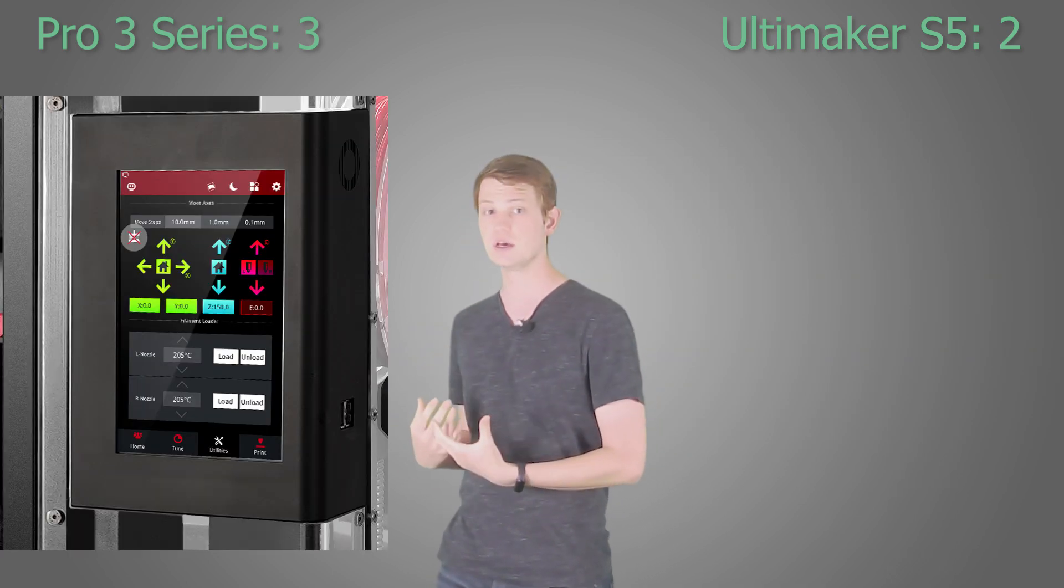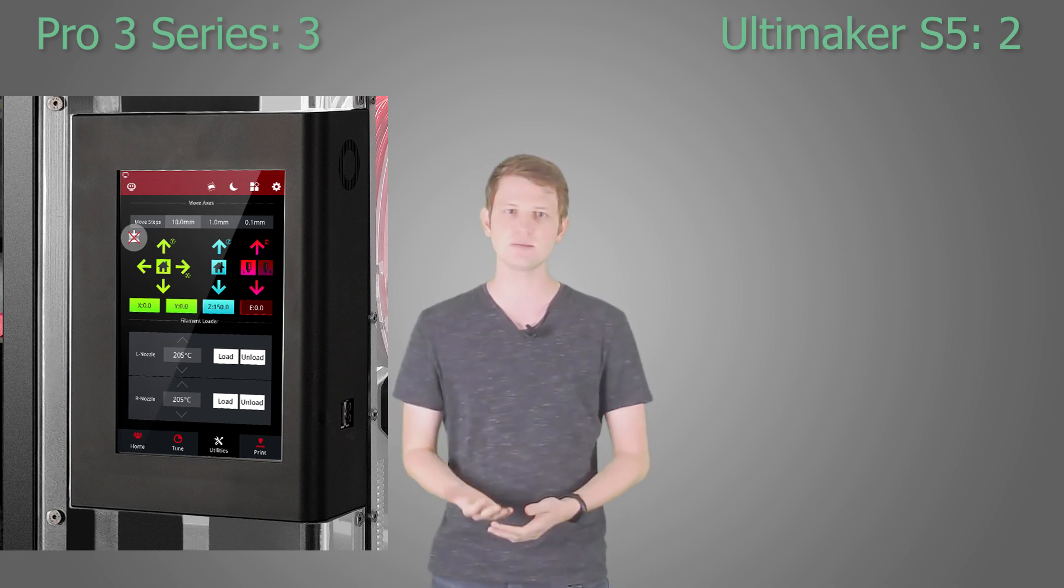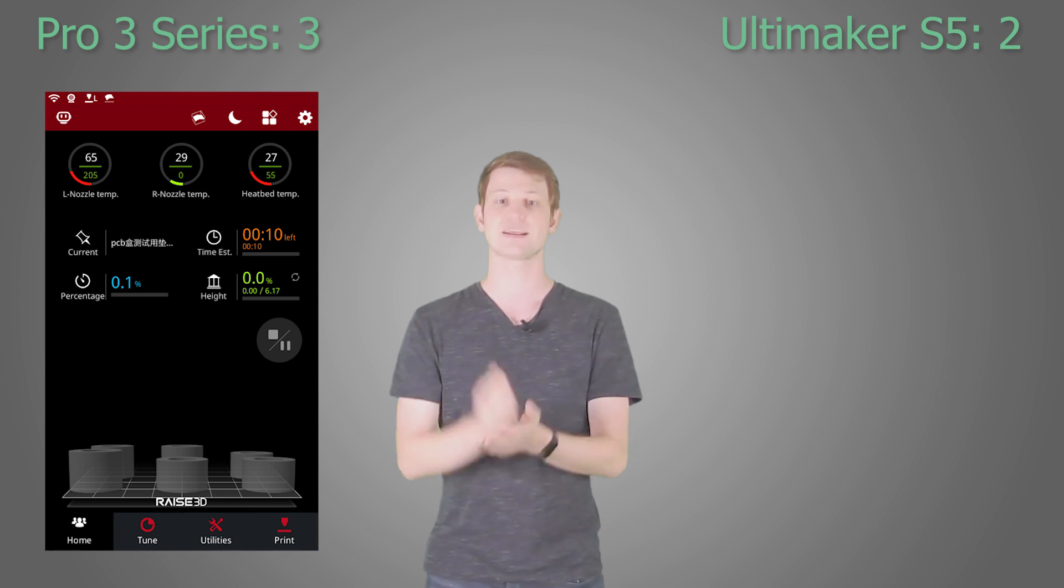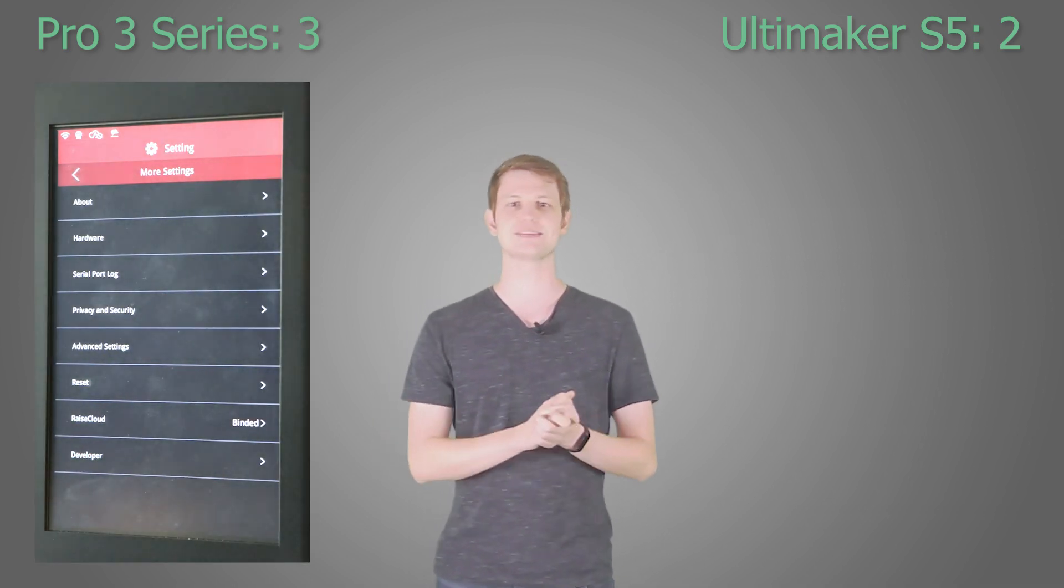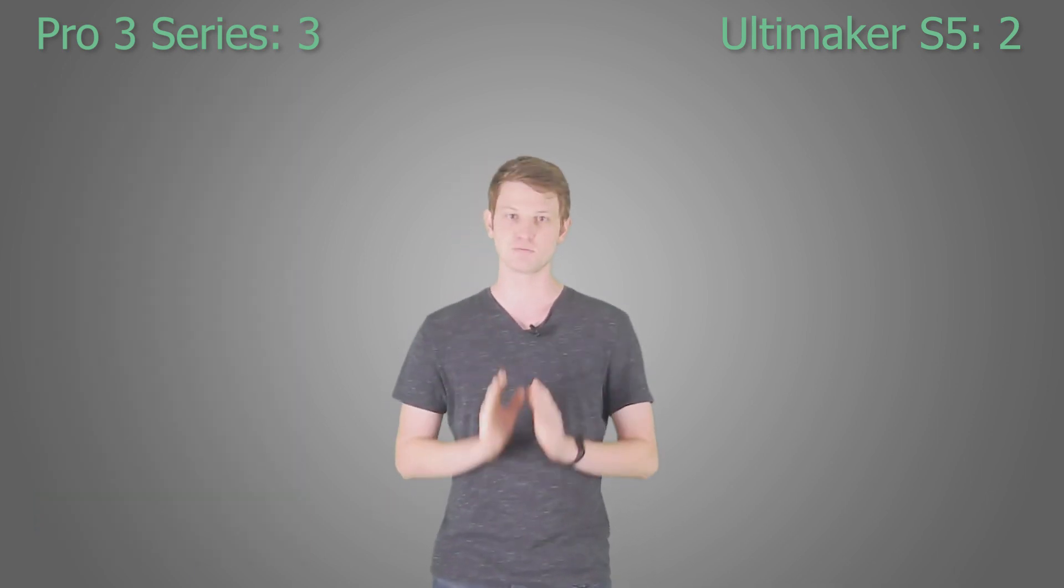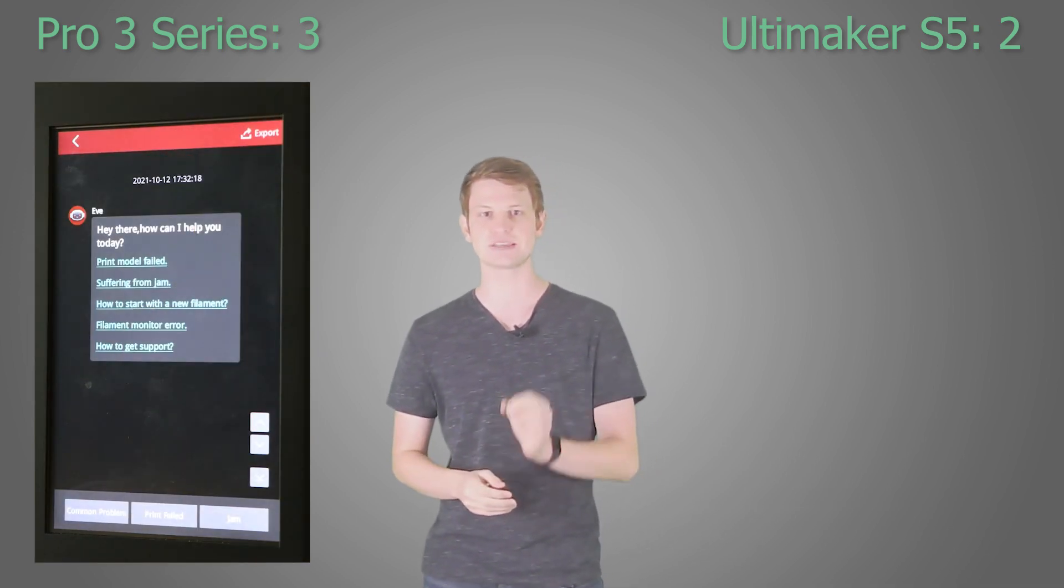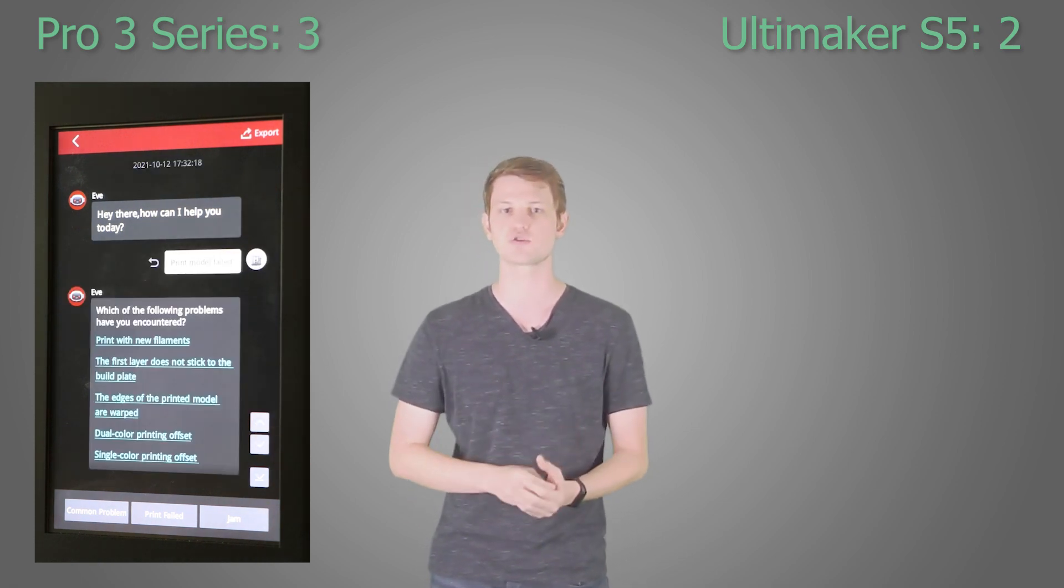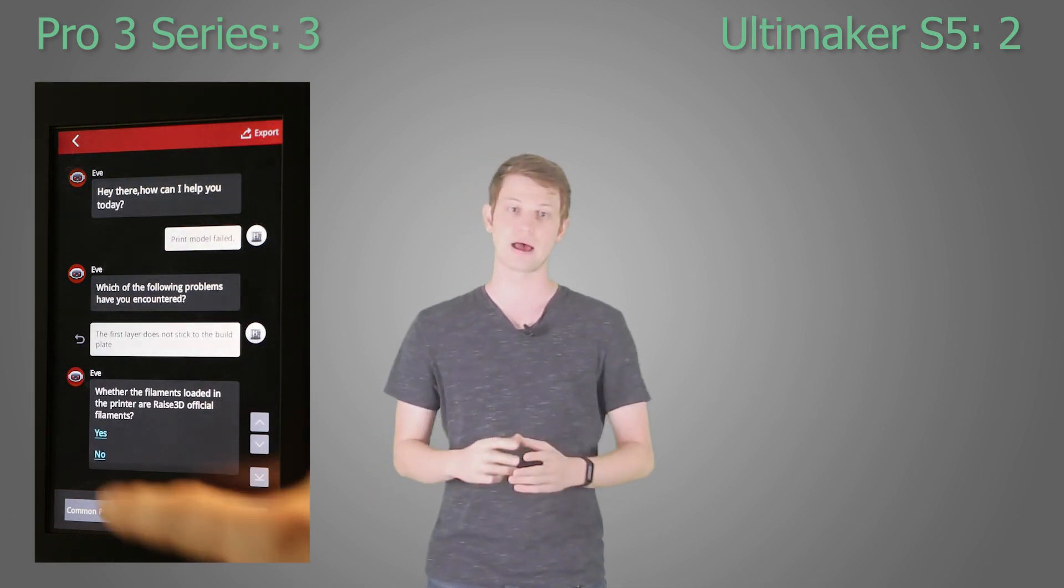The Pro 3 series comes with the same 7 inch color touch display the Pro 2 series came with, allowing for easy monitoring of print status, including temperatures, time remaining, number of layers printed, still to go, etc. There are a ton of settings available through the on-screen menus, as well as the ability to set up time lapses of your prints, showing the flatness of your build plate, and much more. As if that wasn't enough, Race 3D have implemented an intelligent assistant named EVE on the Pro 3, guiding you through maintenance steps and helping to troubleshoot some of the more common issues that can occur while printing, such as bad calibration, clogged nozzles, or bad settings.